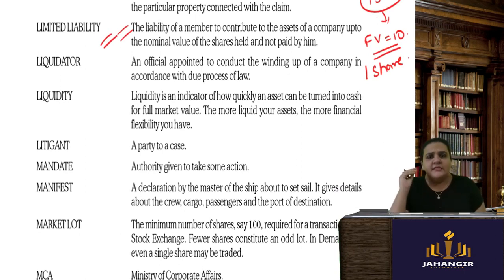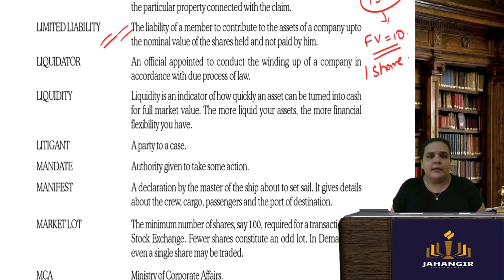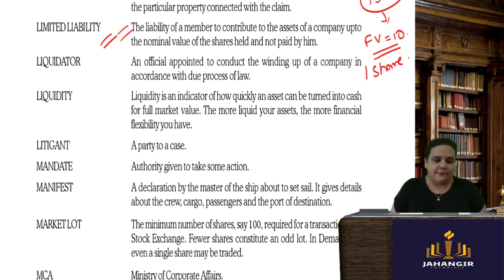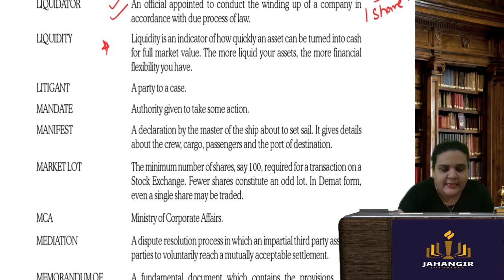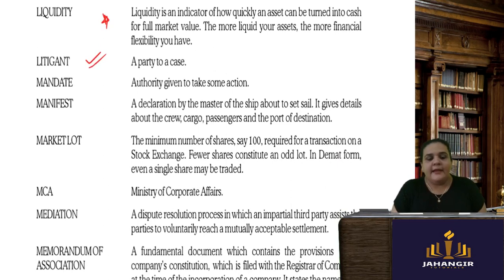A liquidator is an official appointed by the court to conduct the winding up of a company — when the company reaches the stage of dissolution and winding up, the court appoints a liquidator to take care of all assets, liabilities, and payments. Liquidity means how quickly an asset can be converted into money — for example, how quickly your shares can be sold in the market.